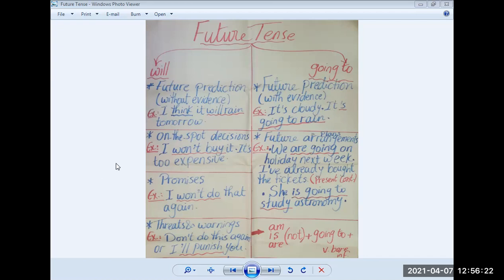As for the second difference, we use will to express on the spot decisions, decisions that are made on the spot. For example, I won't buy it. It's too expensive. Did I plan for this? No. I decided on the spot that I won't buy it. Here is the future form. Won't buy.